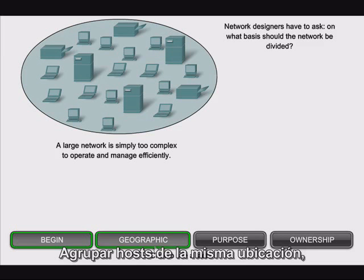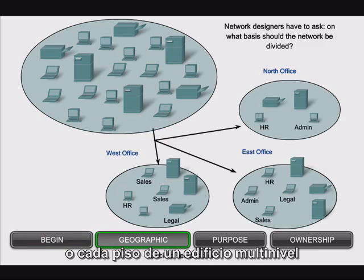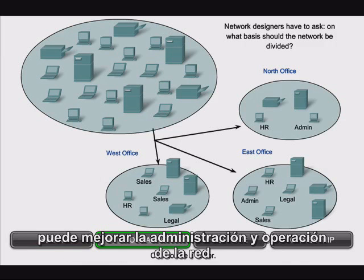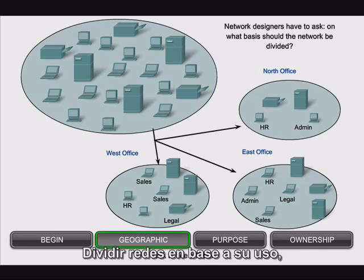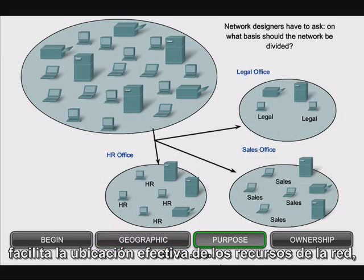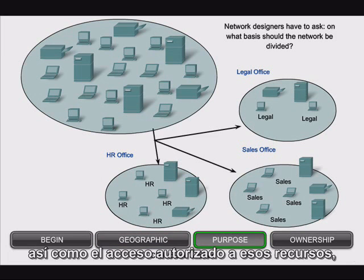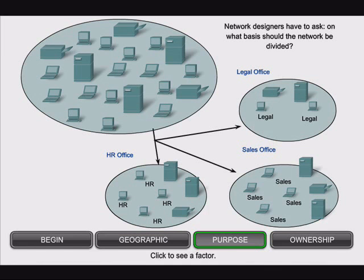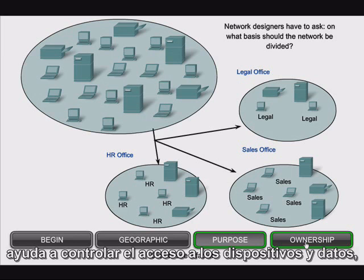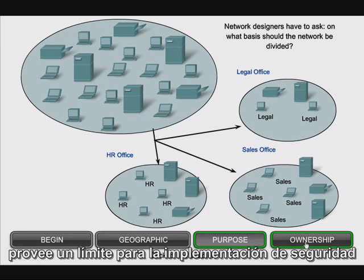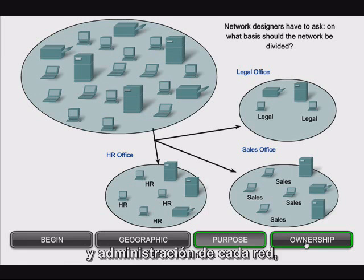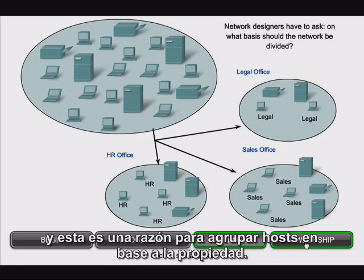Grouping hosts at the same location, such as each building on a campus or each floor of a multi-level building, into separate networks can improve network management and operation — an example of grouping by geographic location. Dividing networks based on usage facilitates the effective allocation of network resources, as well as authorized access to those resources — an example of grouping by purpose. Using an organizational basis for creating networks assists in controlling access to devices and data and eases administration. Finally, dividing hosts into separate networks provides a boundary for security enforcement and management, which is one reason to group based on ownership.